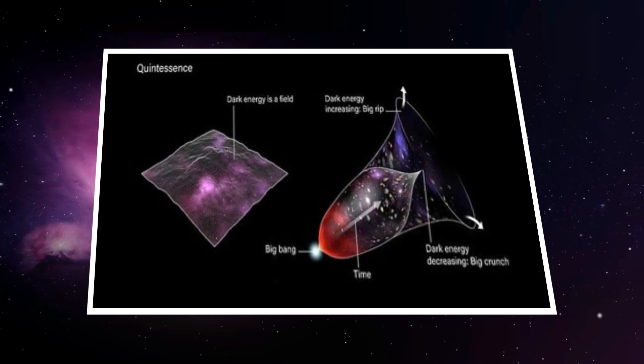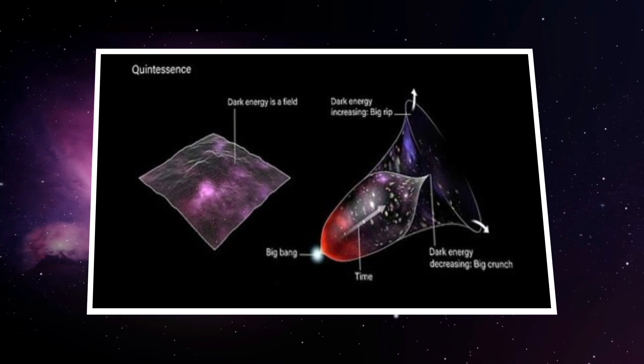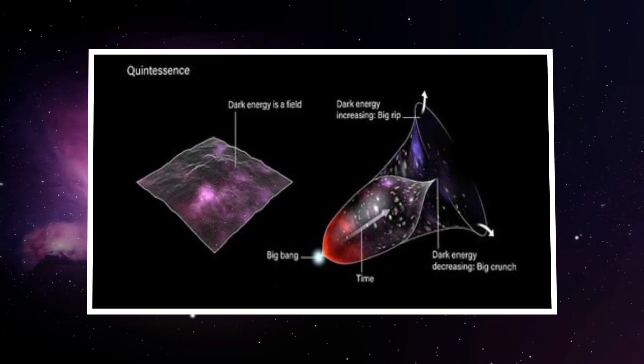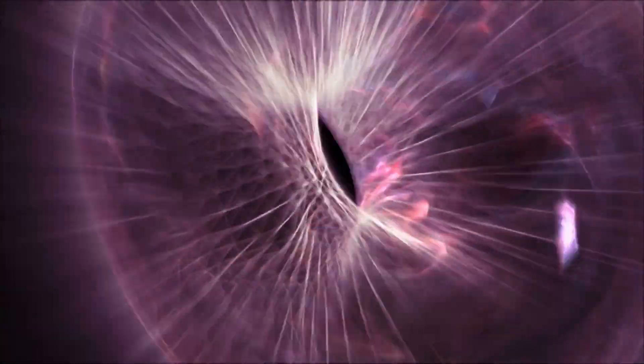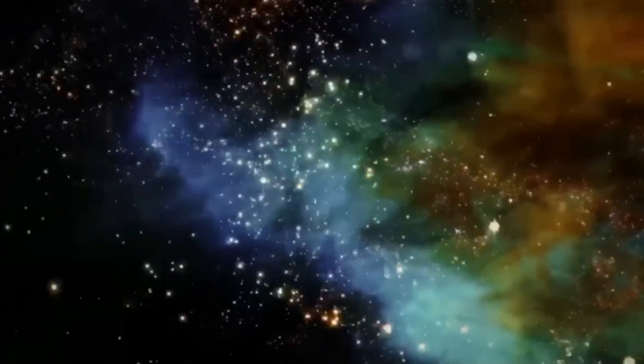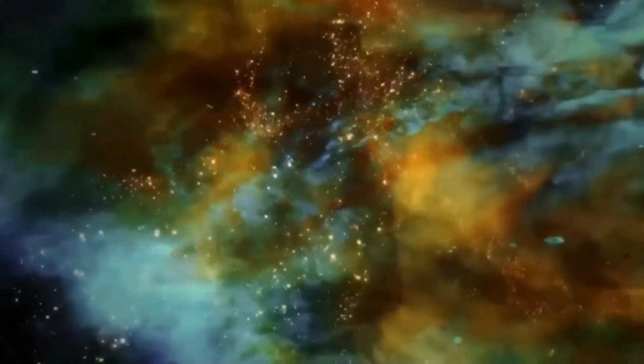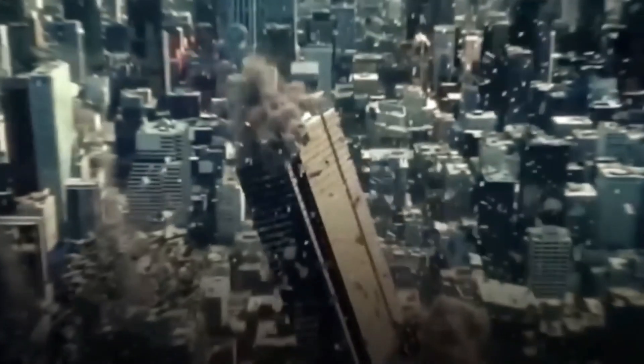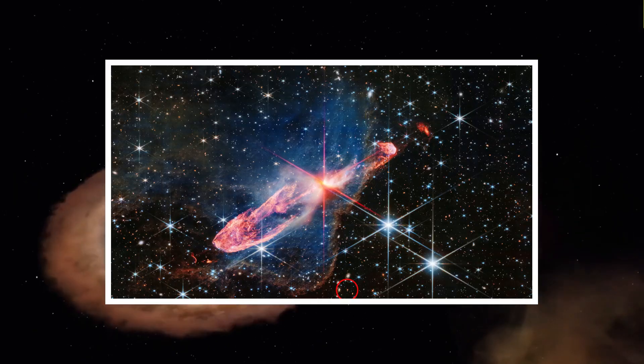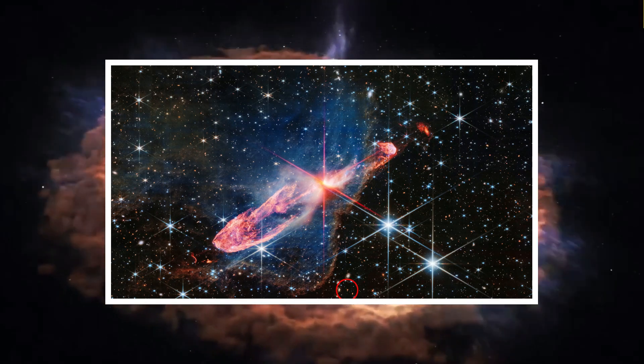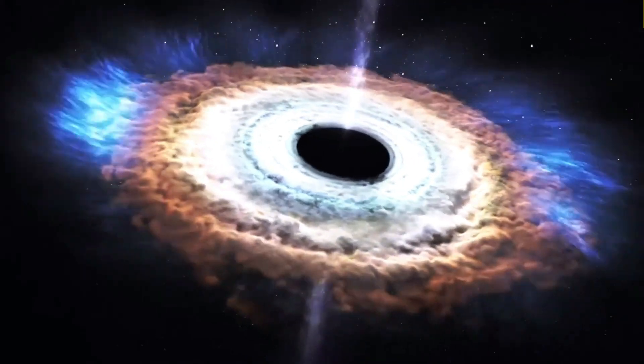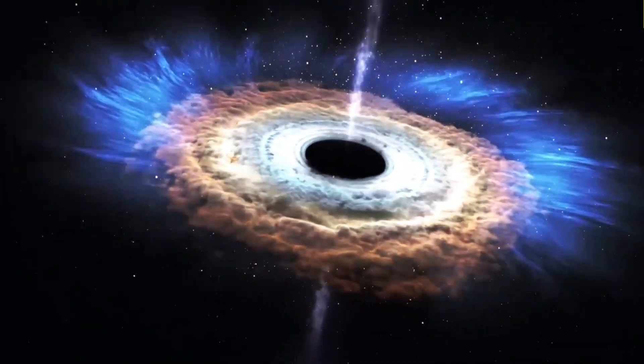The object's unusual composition has sparked theories that it could consist of quintessence, a form of dark energy that makes up about 68% of the universe. Dark energy remains one of the greatest mysteries in astrophysics, influencing the universe's expansion in ways we do not yet fully understand. If the object is made of quintessence or some similar substance, it could provide the first opportunity to study dark energy directly.